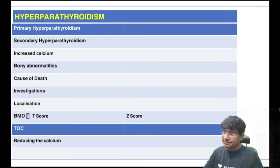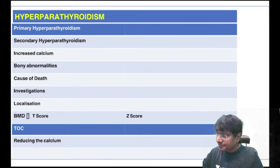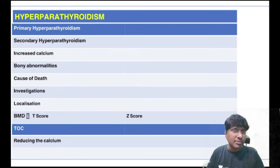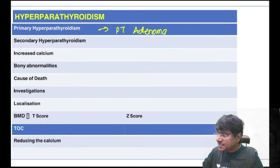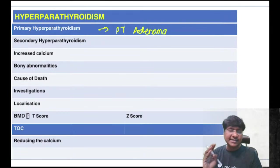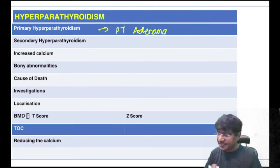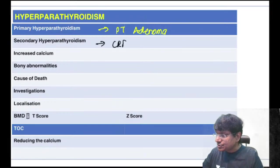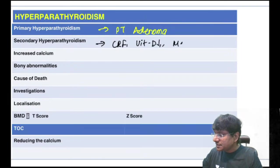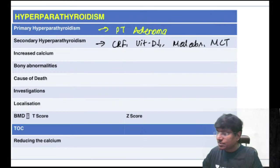Hyperparathyroidism: primary form has the problem within the parathyroid gland. Most common cause is parathyroid adenoma; others are parathyroid carcinoma and hyperplasia. Secondary hyperparathyroidism is caused by chronic renal failure, vitamin D deficiency, malabsorption syndrome, and medullary carcinoma of thyroid.